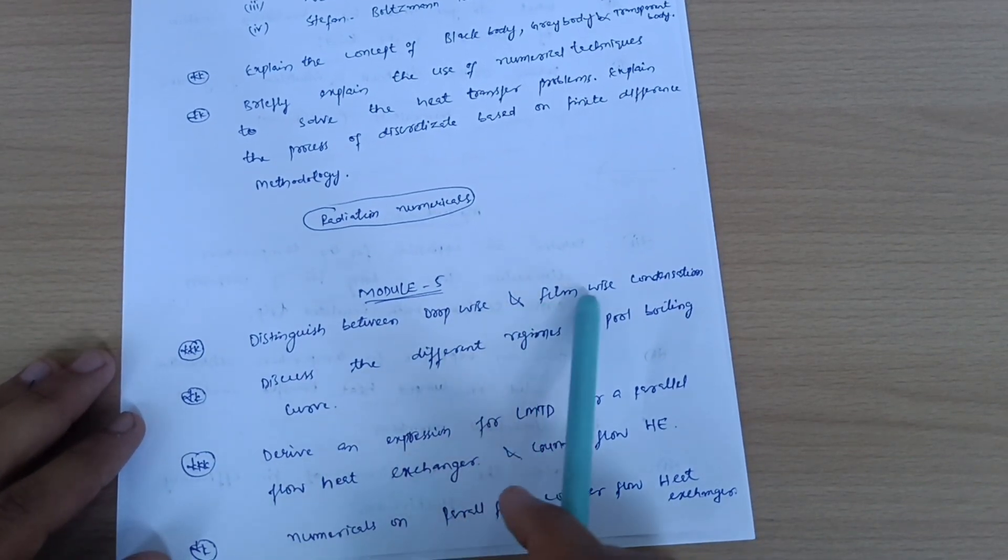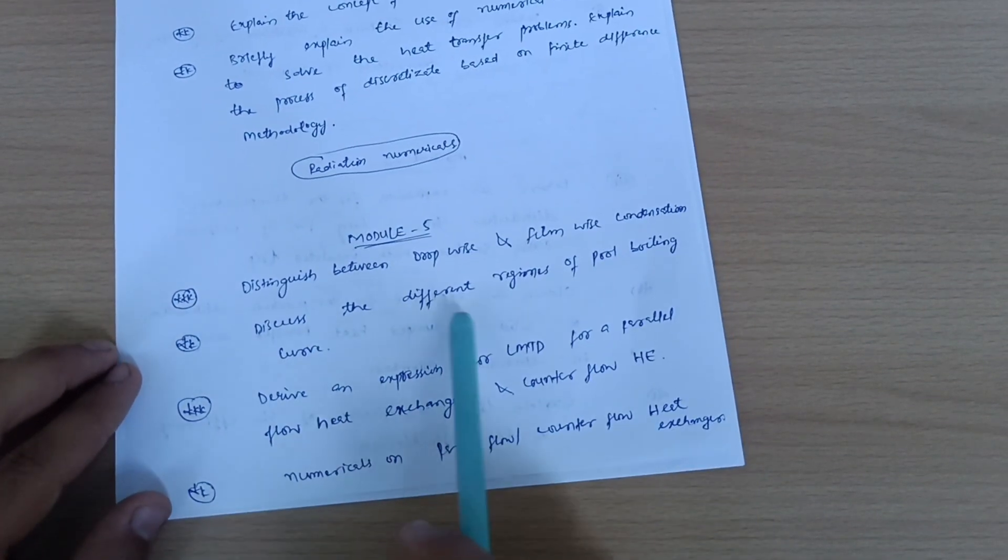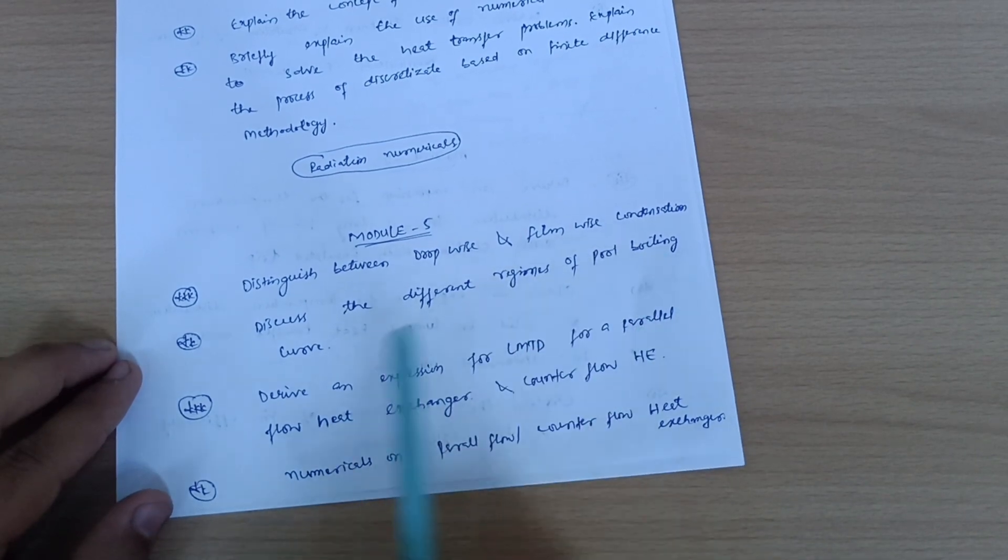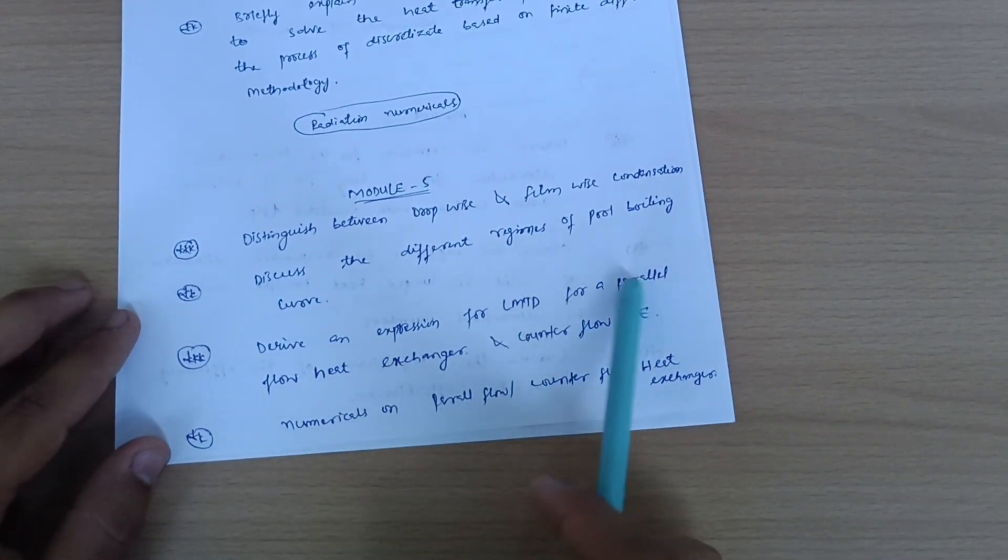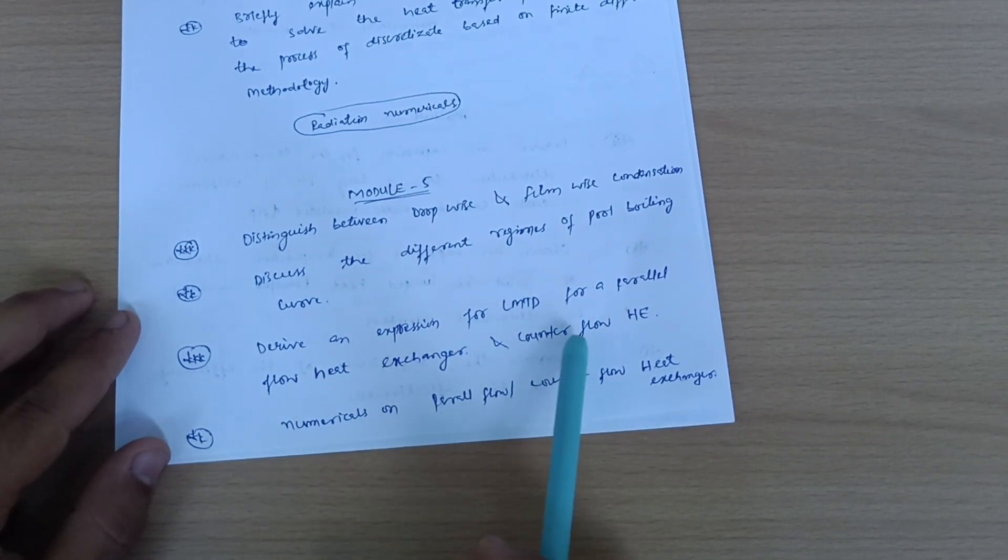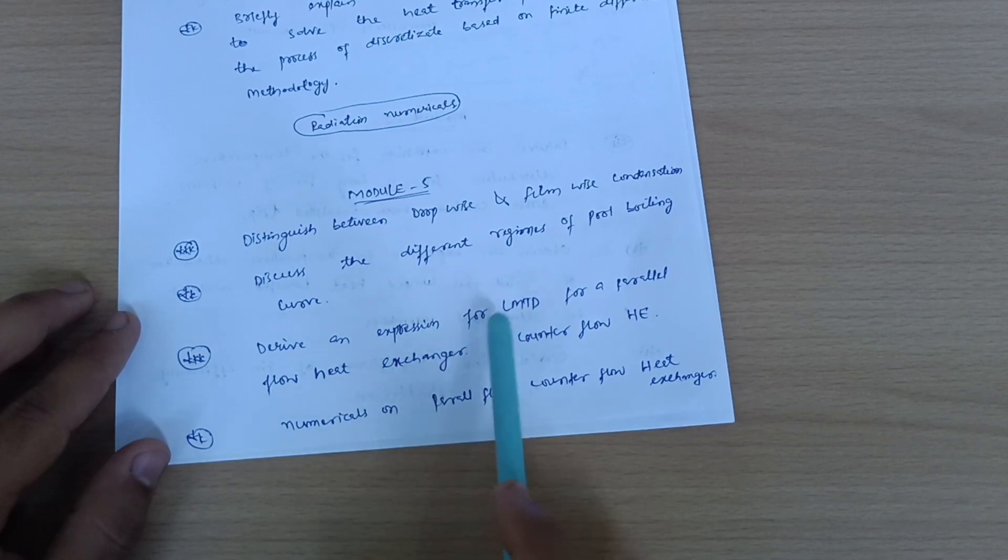Next is Module 5. Distinguish between dropwise and filmwise condensation. Discuss the different regimes of pool boiling curve - most important one. Derive an expression for LMTD for a parallel flow heat exchanger, and sometimes they will also give for counter flow heat exchanger. This may be the 10 marks question.